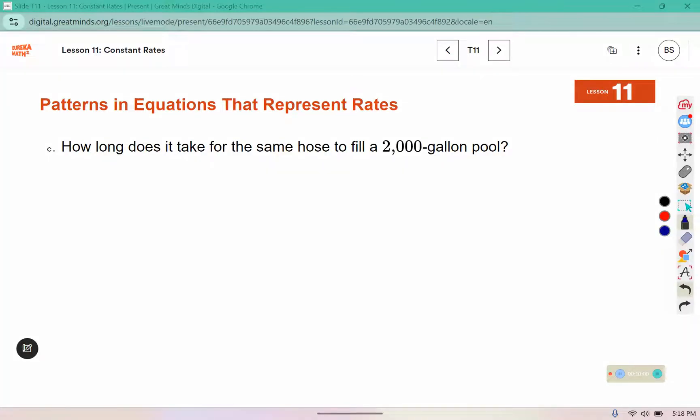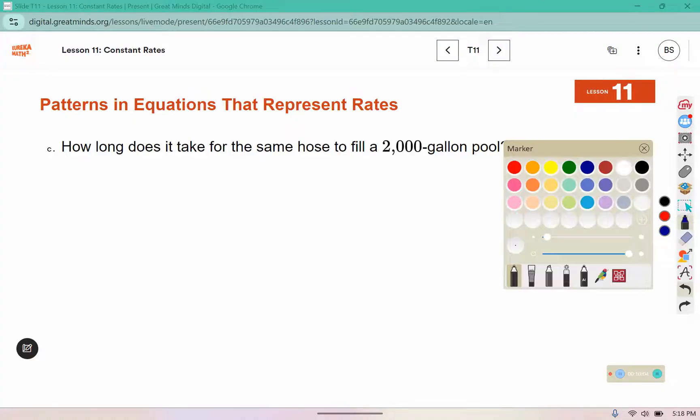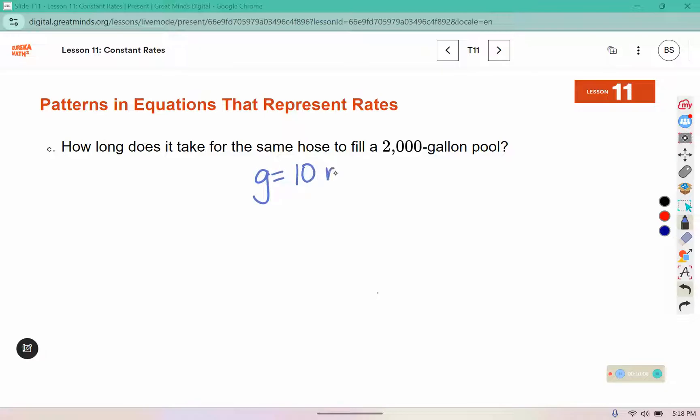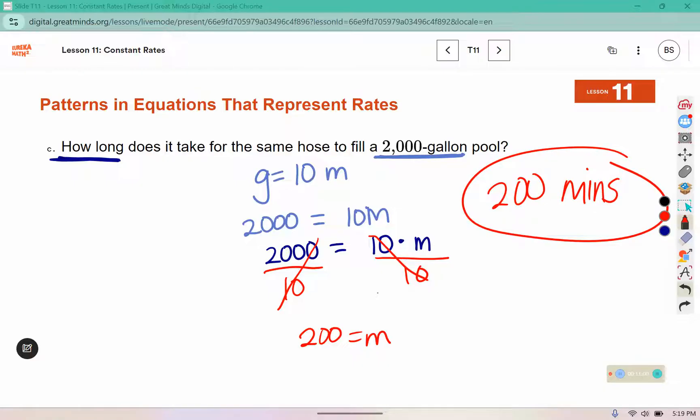How long does it take for the same hose to fill a 2,000 gallon pool? We had g equals 10m. This is gallons, so I'm going to replace the letter g with 2,000. Right now what's happening is I have 2,000 equals 10 times m, but I want to know how many minutes it takes. So to undo what's happening with the m, I'm going to divide by 10. I have to keep my equation balanced, so I need to divide the left side by 10 as well, which leaves me with 200 and m, which means it takes 200 minutes to fill a 2,000 gallon pool.